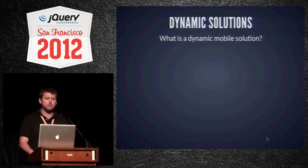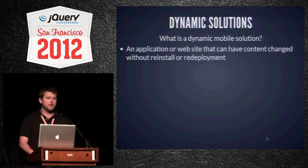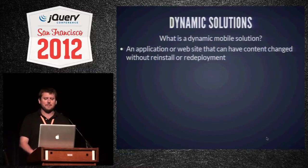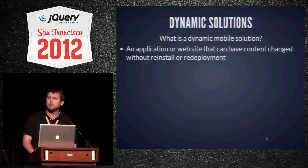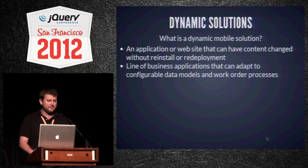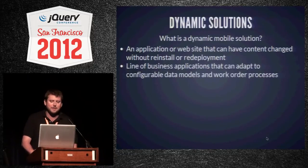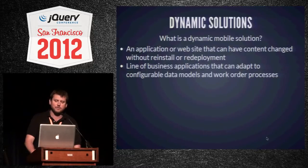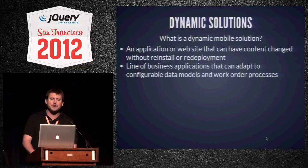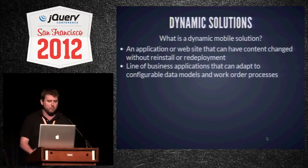A general definition of a dynamic mobile solution would be an application or website that can have content changed without reinstalling or redeploying. A more specific definition would be a line of business application that can adapt to configurable data models and work order processes. In layman's terms, we're talking about a mobile solution that has configurable forms.